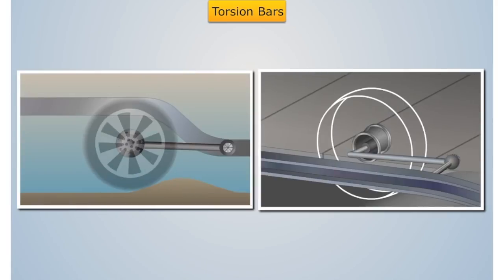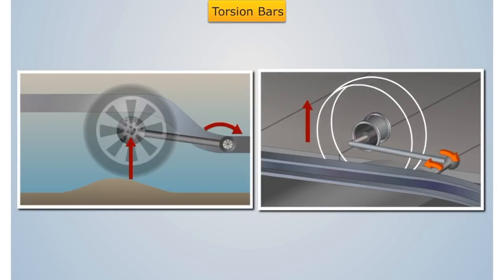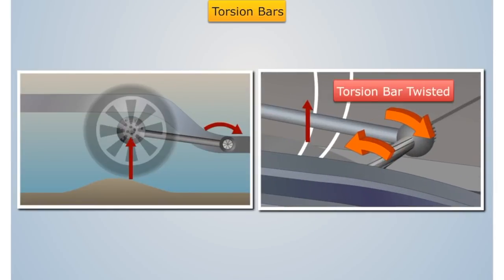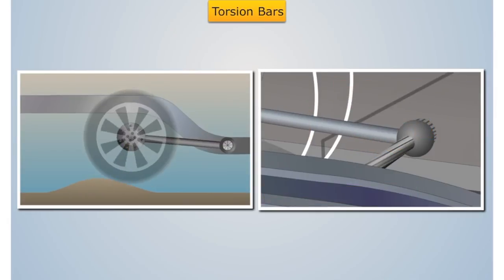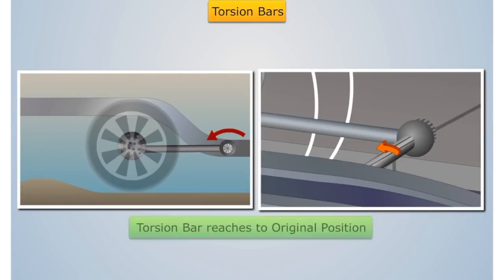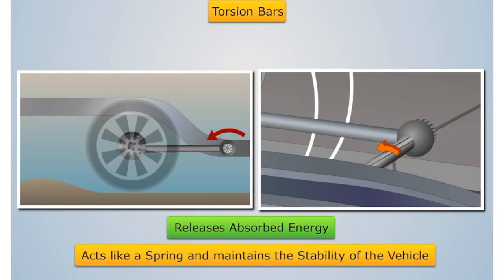Now, the wheel comes across the humps. It goes up and the torsion bar is slightly twisted, thus absorbing the wheel vibration. As the wheel passes the humps, the torsion bar reaches its original position. It releases the absorbed energy. In this way, it acts like a spring and maintains the stability of the vehicle.